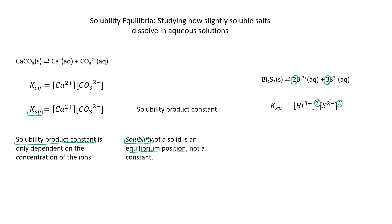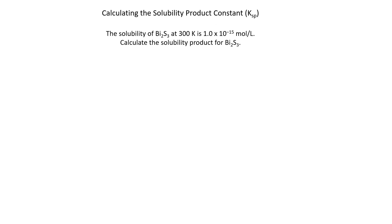Let's see how this works out in a calculation. First, let's calculate the solubility product constant, or the KSP — this is the equilibrium constant. The problem reads: the solubility of bismuth sulfide at 300K is 1 × 10⁻⁵ moles per liter. Calculate the solubility product for bismuth sulfide. This is where understanding the difference in your terms becomes really important. Remember, solubility is the equilibrium position; the solubility product is the KSP, which is an equilibrium constant.